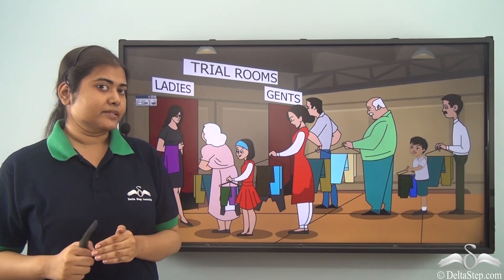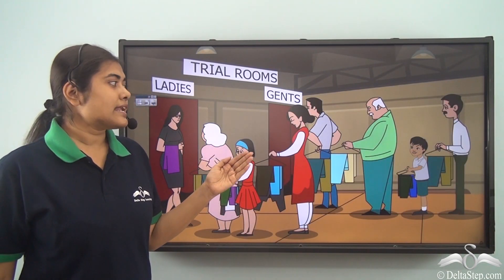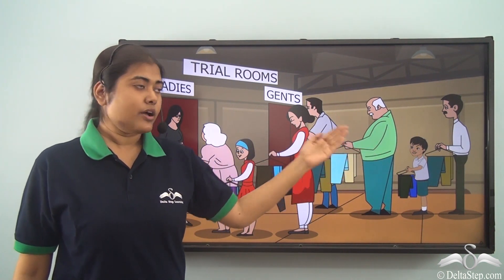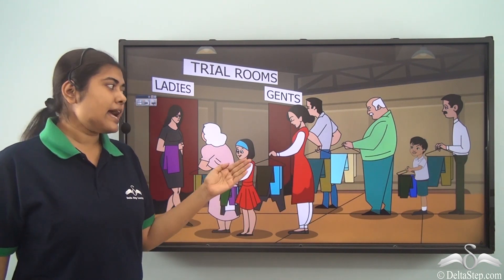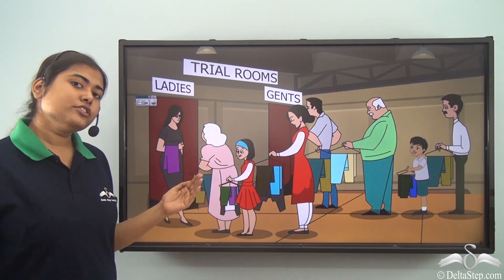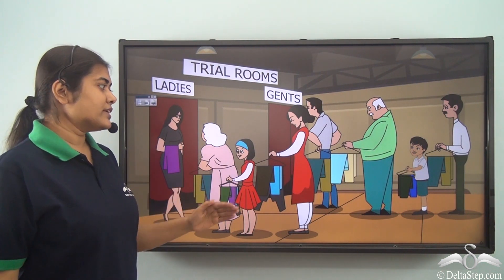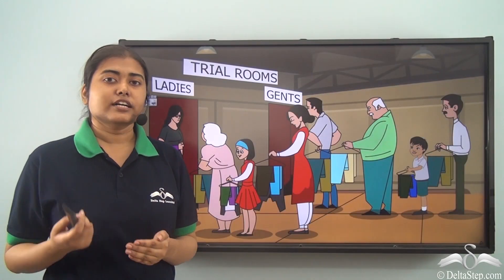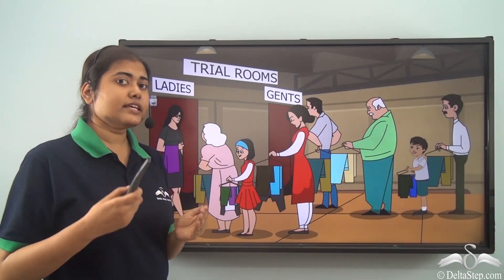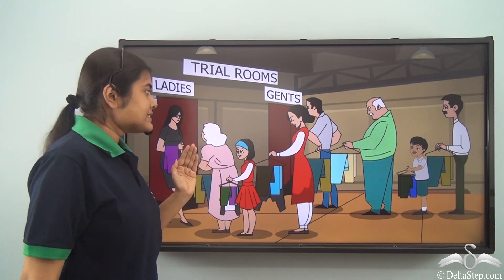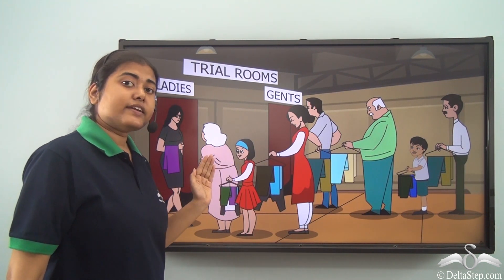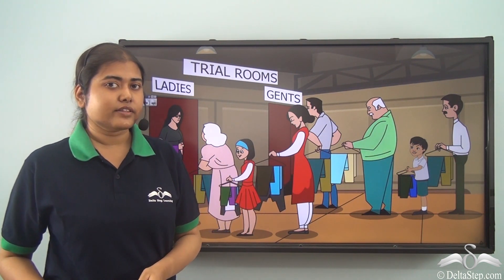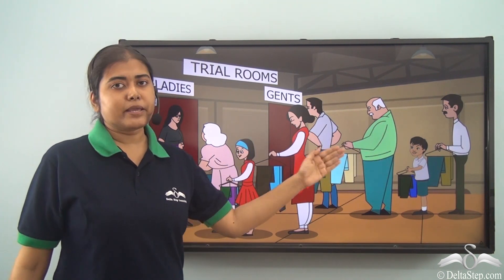Now something happens. Ravi sees that his father takes him and makes him stand in a different queue, whereas his little sister and his mother stand in a different queue. What Ajay found very interesting was the fact that the people standing in the line where his sister was standing were all females, whereas the line in which he was standing with his father had only male people.